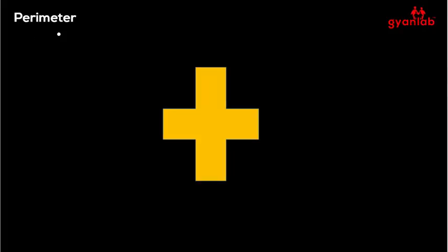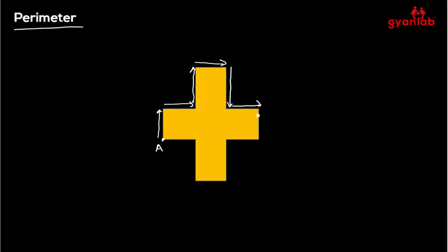Let's learn about the concept of a perimeter. Say I have this plus-shaped figure in front of me and I mark this point here as A. Starting from A, I keep travelling — first this length, then this length, then this entire length — travelling along the boundary of the plus-shaped figure. After travelling entirely around it, I have reached back to my point A. This entire length that I travelled is the perimeter of this plus-shaped figure.